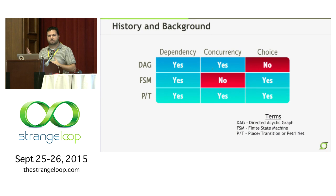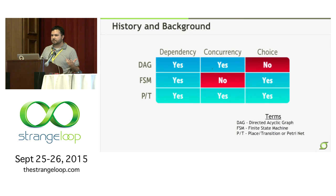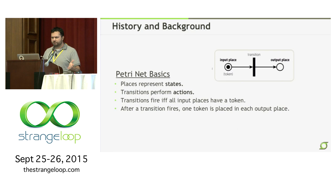What we decided to do is encode at the very lowest level all of our workflows in a Petri net. Most people haven't heard of Petri nets — we hadn't when we dug into this — but they've been really helpful for us. They're called place-transition nets, named after the guy who invented them — Petri. They can do both concurrency and choice; they can actually do more than DAGs and FSMs, but they cover those use cases really well. Then we'll get back to what we built: the Tero workflow service.